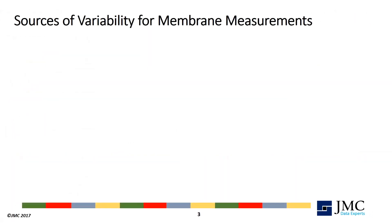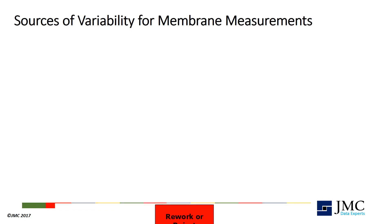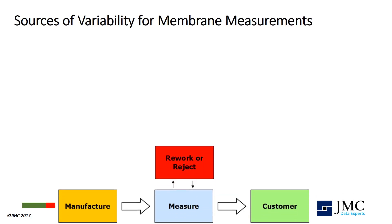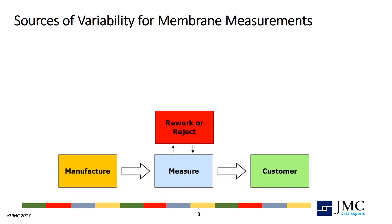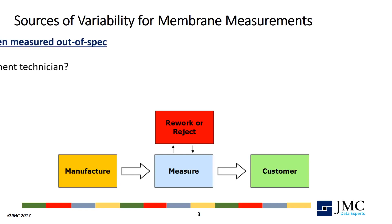Consider the control scheme for our membrane manufacturer. Each part is manufactured, measured, and then rejected or reworked if the measurement is out of specification, or passed to the customer if the reading is in specification.